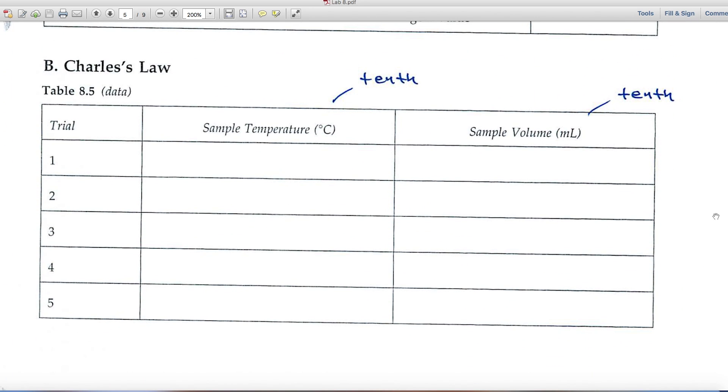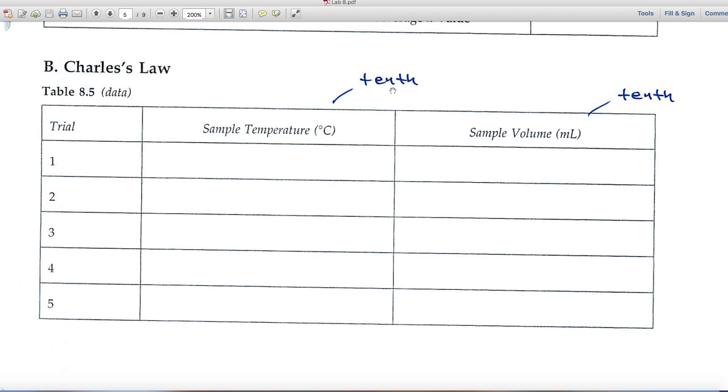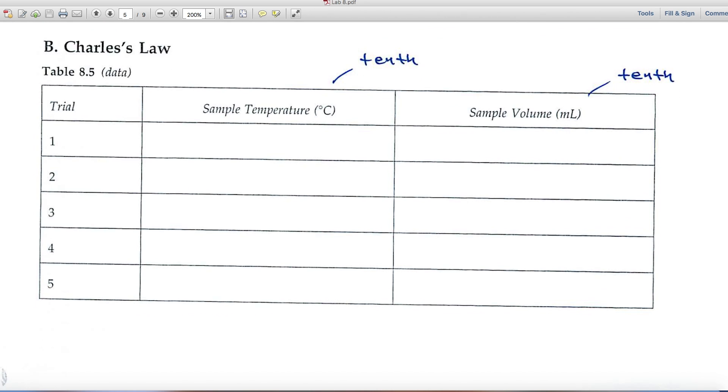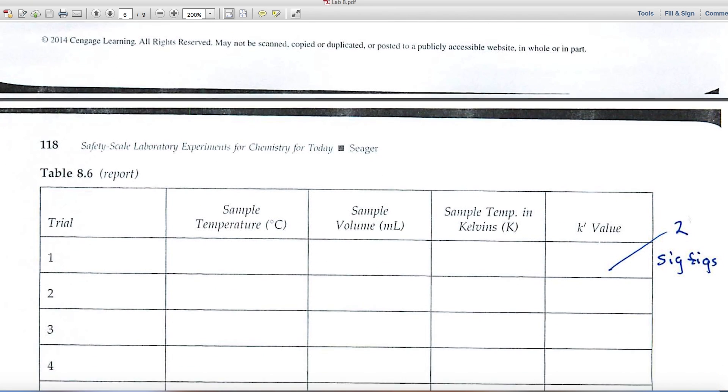Part B deals with Charles law. You'll gather temperatures, express those to the tenth. You'll be measuring sample volumes again, and express those to the tenth.